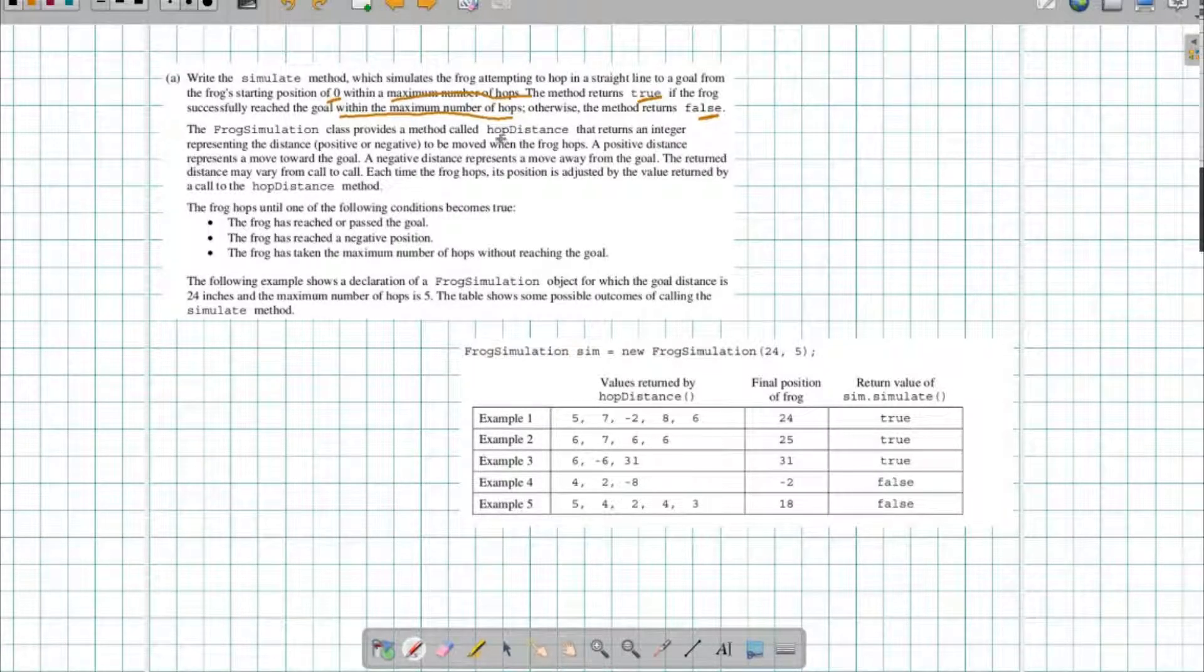We have a method called hop distance that we're going to call repeatedly, and as we call it repeatedly, we're going to be getting different values out of it. It's going to be the distance that we hop each iteration. A positive distance moves towards the goal, a negative distance moves away from the goal. The distance varies from call to call. Each time the frog hops, its position is adjusted by that value.